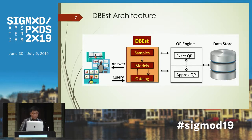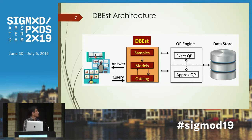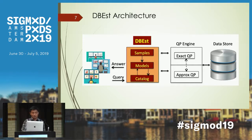Here is the architecture of DBS. There are three main components: the samples module, which relies on reservoir sampling to make uniform samples from the backend; the models module, which contains all the machine learning models; and the catalog module, which stores information about all available models. When a query comes in, DBS searches its catalog to check whether models are available to give the prediction. If not, it can go to the backend server to get the results.